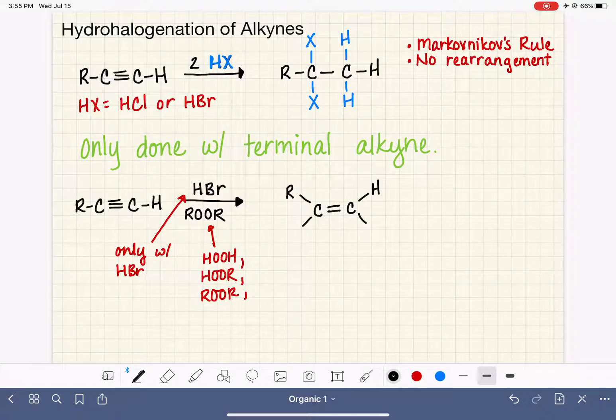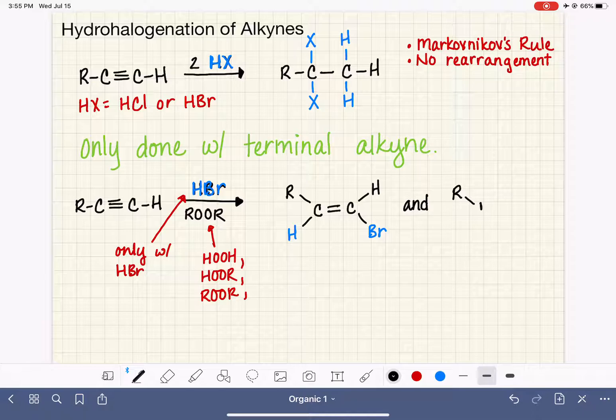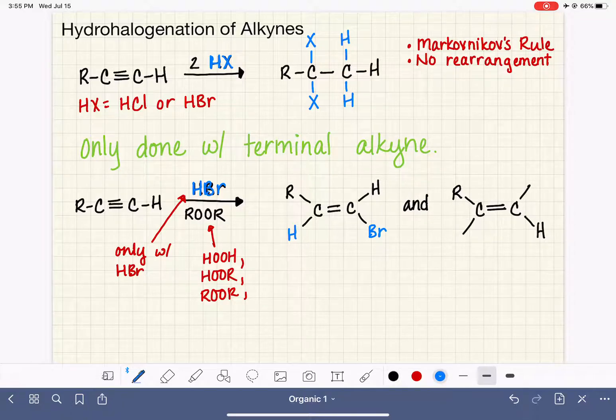The anti-Markovnikov addition of the HBr molecule is typically only done once. So I am drawing this HBr in a different color. So the HBr's hydrogen will go anti-Markovnikov, which means the bromine goes over here. And what we do see is no control over forming the cis or trans isomers in this reaction.